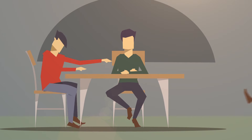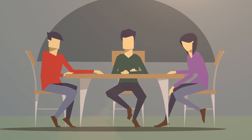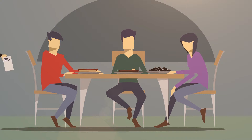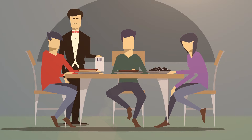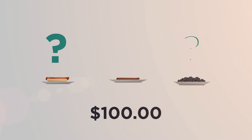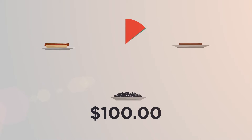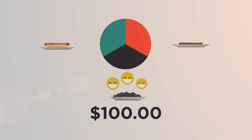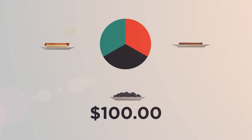Imagine that you're in a restaurant with two friends. One orders a hot dog, one orders a plate of caviar, and you order a steak. The waiter comes to the table with a total bill of $100, but he doesn't know how much each of you should pay. If everyone paid the same amount, the guy who ordered the caviar might be happy — but what about the guy who ordered the hot dog? Enter assessors.